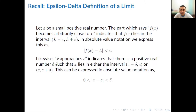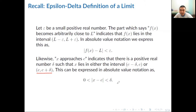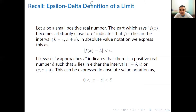Likewise, the phrase 'x approaches c' indicates that there is a positive real number, called delta, such that x lies in either the open interval (c minus delta, c) or the open interval (c, c plus delta). In absolute value notation, we write: the absolute value of x minus c is greater than 0 but less than delta.